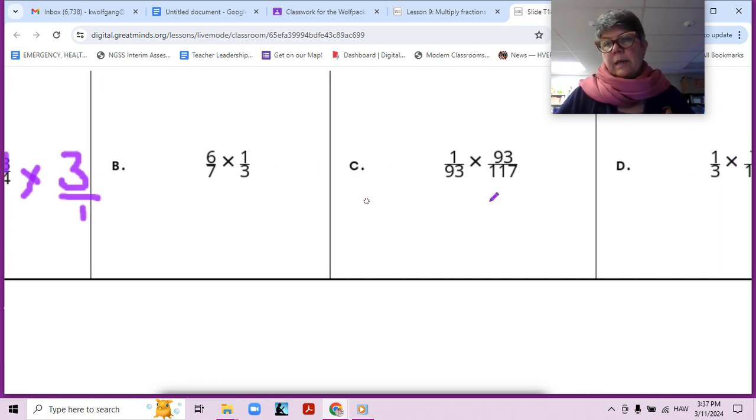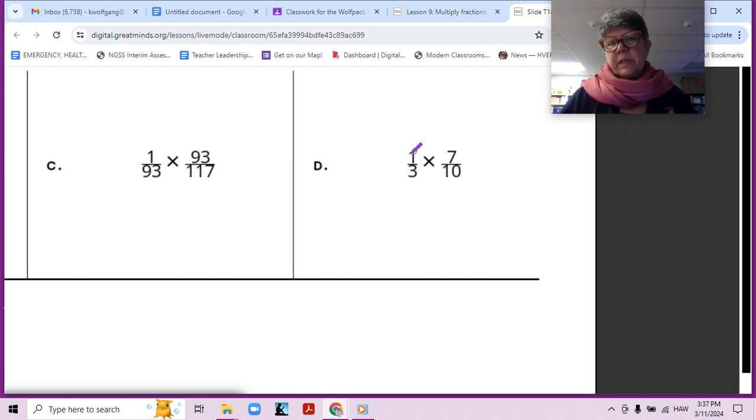What about, let's go down here to this one, one third and seven tenths. So one third times one tenth is one thirtieth. And then seven of them would be seven thirtieths, okay?